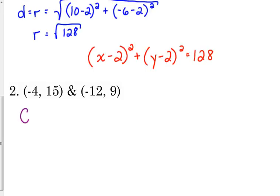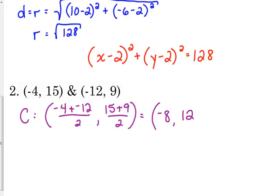So start with the midpoint, which gives us the center. Negative 4 plus negative 12 over 2. 15 plus 9 over 2. That gives us negative 16 divided by 2, negative 8, and 24 divided by 2, which is 12. Our center of our circle is the point (-8, 12).